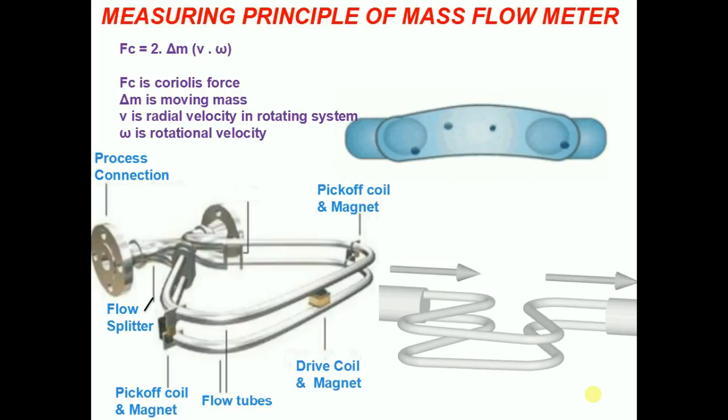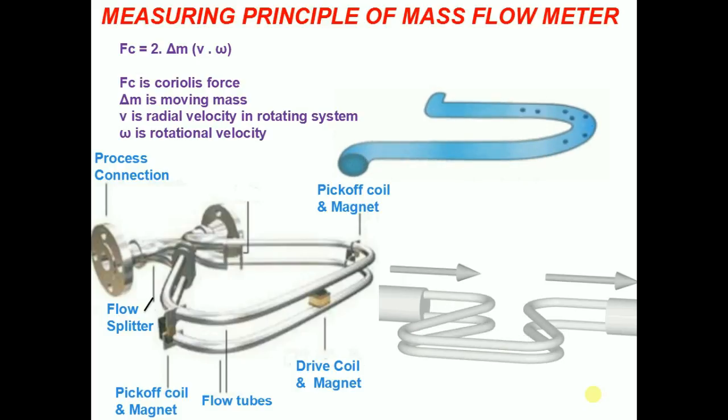The time difference between the sine waves is measured and is called delta M, which is directly proportional to the mass flow rate.